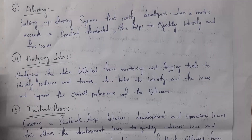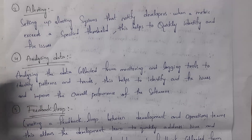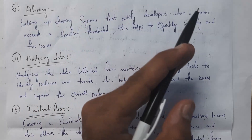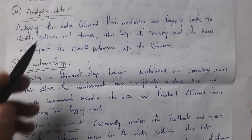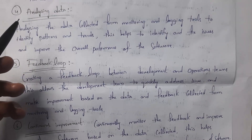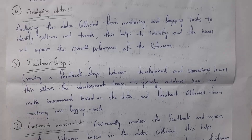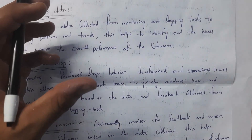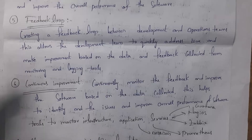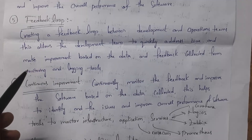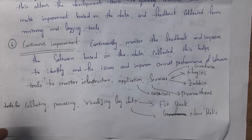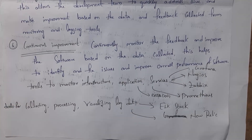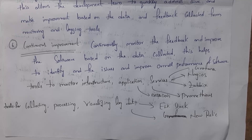The third activity is alerting. For example, if the software is not responding properly and is consuming a lot of memory, automatically an alert message is received, and the developer immediately takes action. If alert systems are set up, whenever any metric exceeds a threshold, we get an alert message and can fix the issue. The fourth activity is analyzing data — after collecting data from monitoring and logging tools, the information is represented in the form of bars and charts, so we can clearly identify software performance. The fifth activity is the feedback loop — based on feedbacks, the development and operations teams interact and fix issues. And finally, continuous improvement — by continuously monitoring and taking feedback, we can improve our software performance.